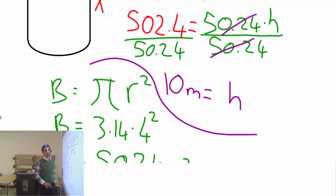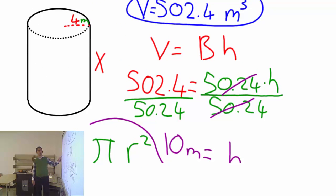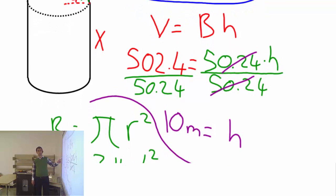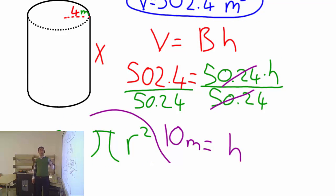502.4 divided by 50.24, I know that that's 10. Use your calculator, you will get 10. And let's look at the unit, it's meters, so 10 meters. That's how easy it is when you know the volume and you know the radius, you want to find out the height. But now let's do it the other way around.